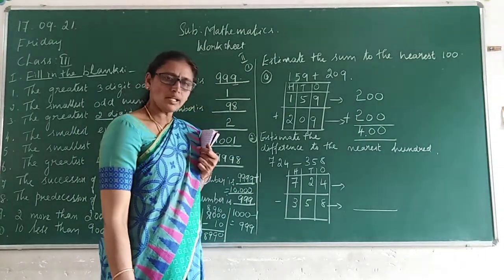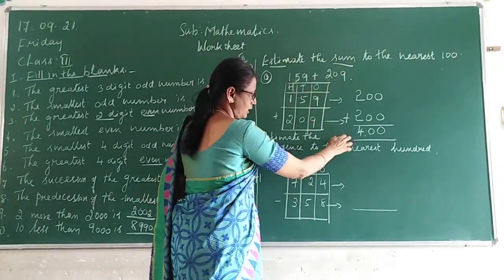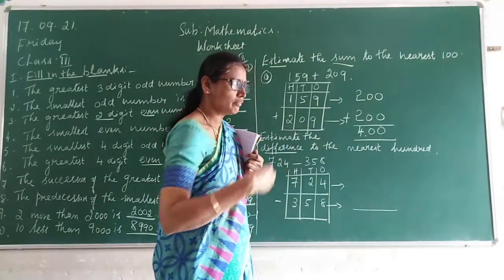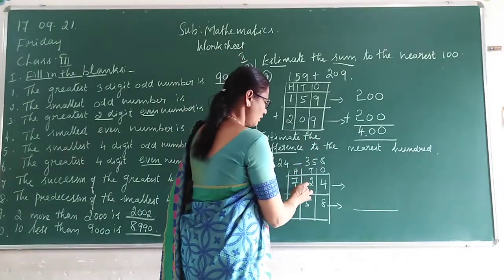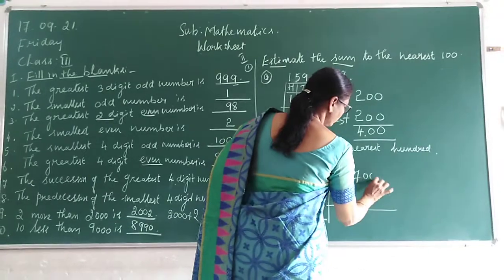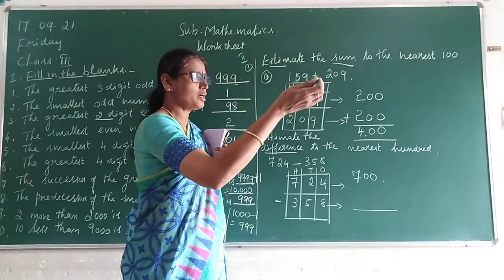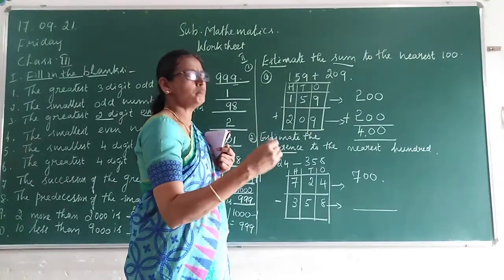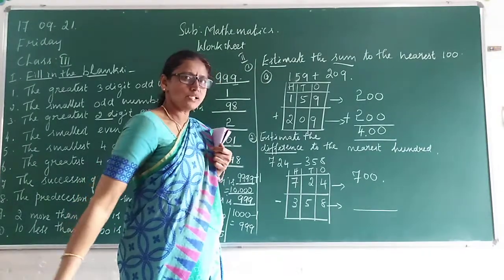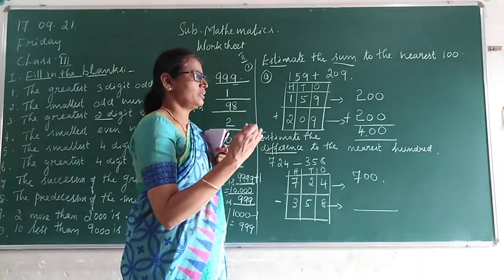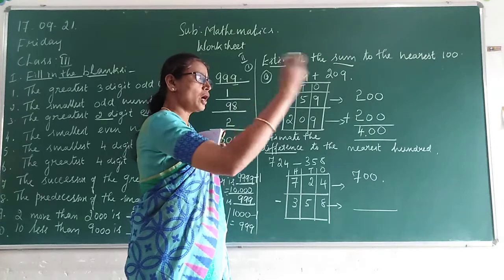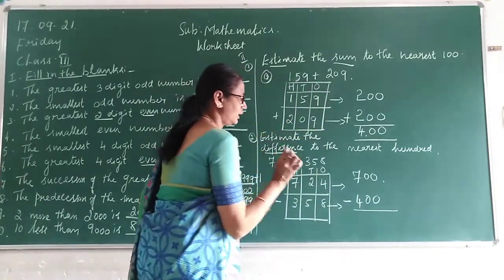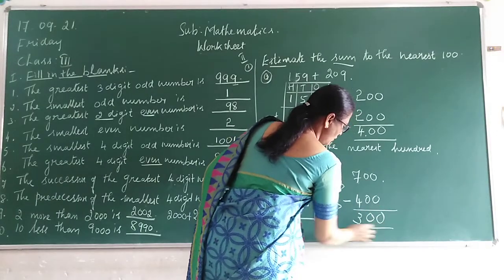Estimate the difference to the nearest hundred. Here you have to subtract after estimating. 724 is nearer to 700. 358 is nearer to 400 — because 350 is the halfway point between 300 and 400, so 350 and above goes to 400. So 700 minus 400 is 300. The estimated difference is 300.